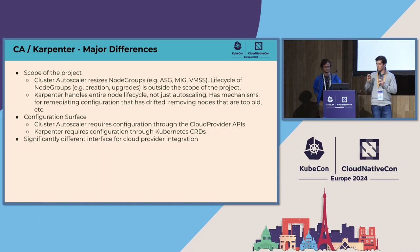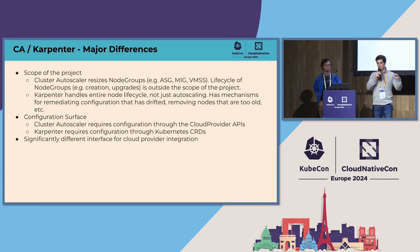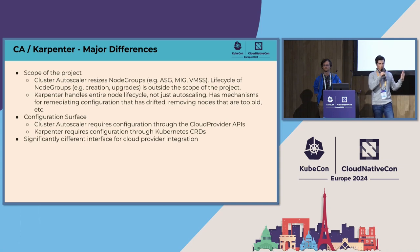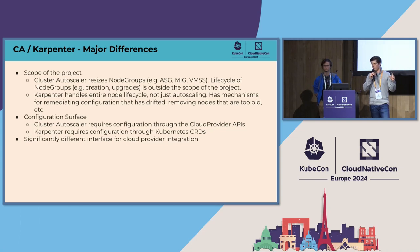There are some major differences. Cluster Autoscaler works within the construct of cloud provider-based APIs — all configuration sits within the cloud provider, typically within node groups: ASGs, MIGs, VMSS. The lifecycle of those node groups is fully managed by the cloud provider. So if you have a new image to roll out, Cluster Autoscaler won't manage that — it only handles autoscaling and downscaling of existing node groups, incrementing or decrementing the count via cloud provider APIs.